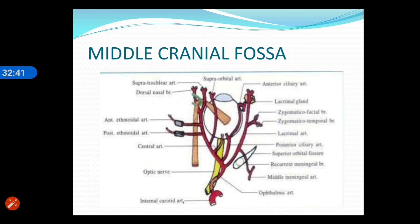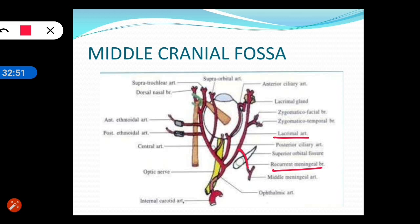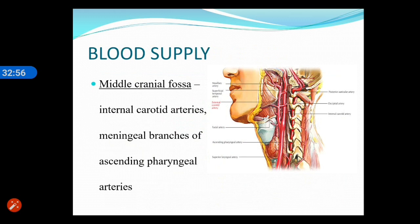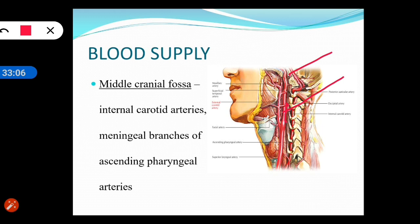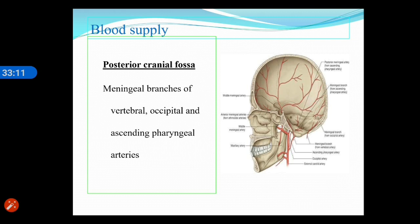The middle cranial fossa is also supplied by the recurrent meningeal branch of the lacrimal artery, the meningeal branch of the internal carotid artery, and the ascending pharyngeal artery. The posterior cranial fossa is supplied by meningeal branches of the ascending pharyngeal artery, the vertebral artery, and the occipital artery.